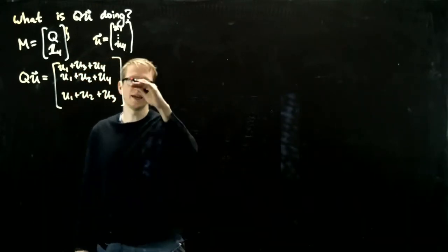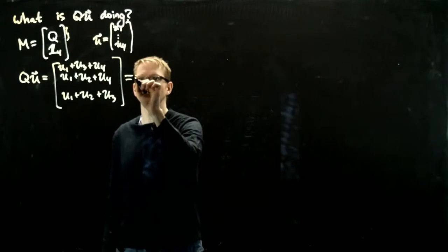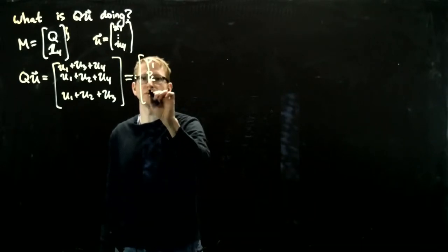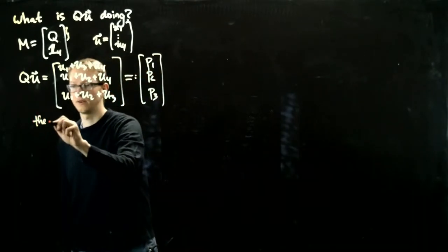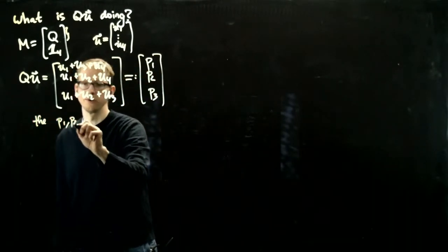And these entries here, let's call them p1, p2, and p3 for now, and they are called parity bits.